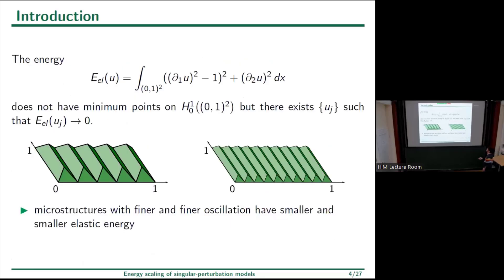A simple scalar model shows that we cannot assume minimizers exist. For instance, taking the stress-free set as {(1,0), (-1,0)}, we can prove that for boundary datum zero we have no minimizers, but we can achieve the infimum of the elastic energy via minimizing sequences that oscillate with finer and finer oscillations.